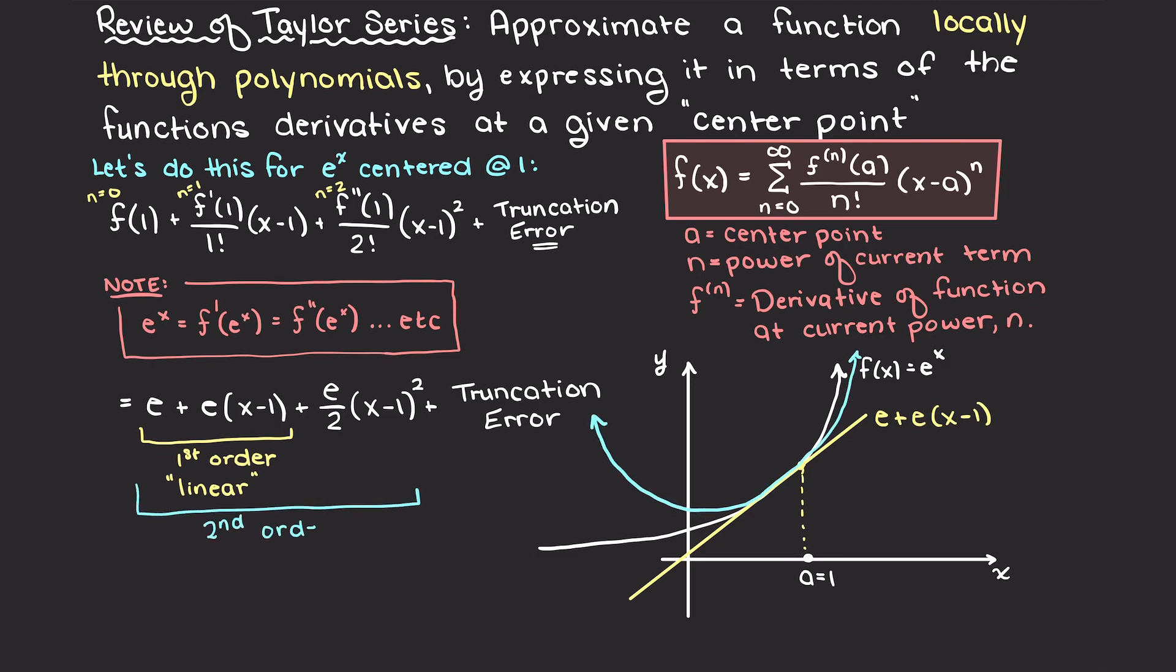Secondly, our second order expansion is an even better approximation as it uses a parabola. If we were to continue, a third order would give you a cubic. As you can see, within a small range around our center point, we have a very good approximation of our function.